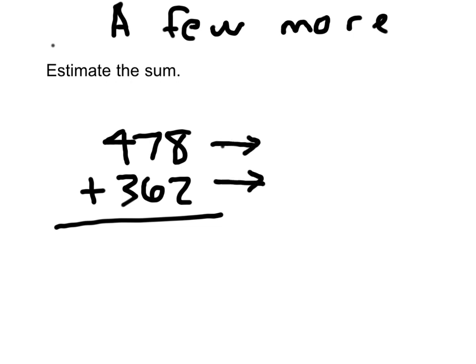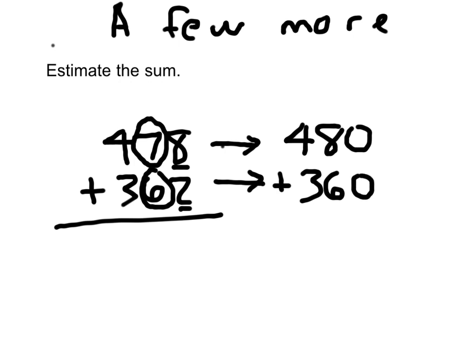If we estimate the sum, and sometimes it will tell you as to what place value to estimate the sum to, and sometimes it won't. If it doesn't, then you get to choose as to what place value that you want to estimate to. And there's no wrong answer, as long as you choose the same place to estimate to. I'm going to choose the tens place to estimate to. We've got 480 here. You do the next one, 362. Correct. 480 plus 360, the estimated answer is 840. And again, when it says estimate the sum, if it doesn't give you a place value, you get to choose the place value.